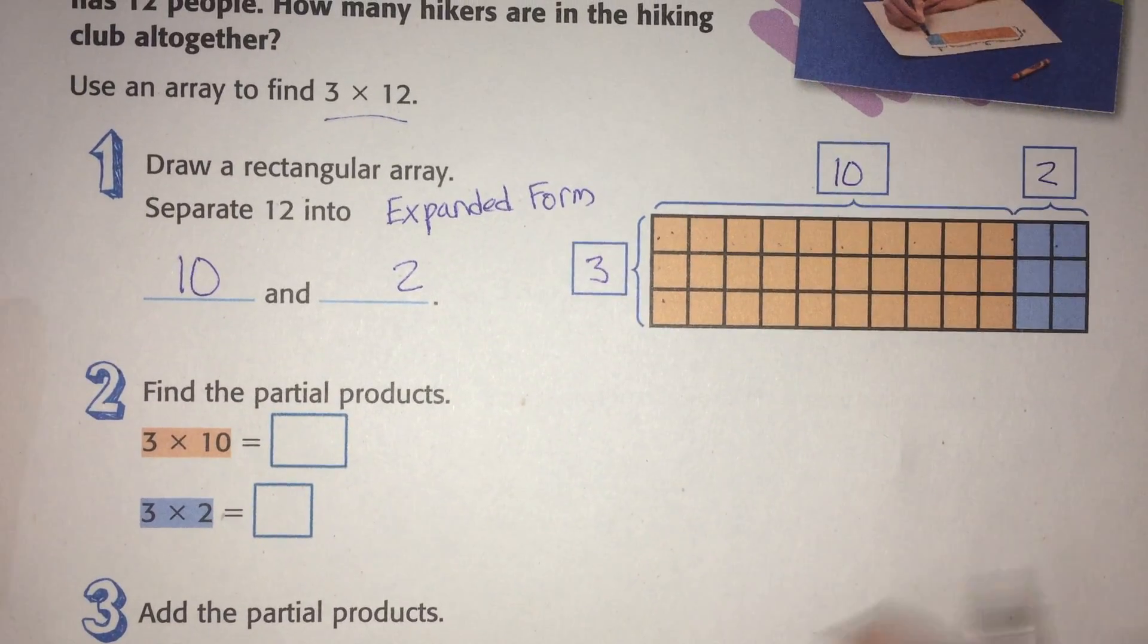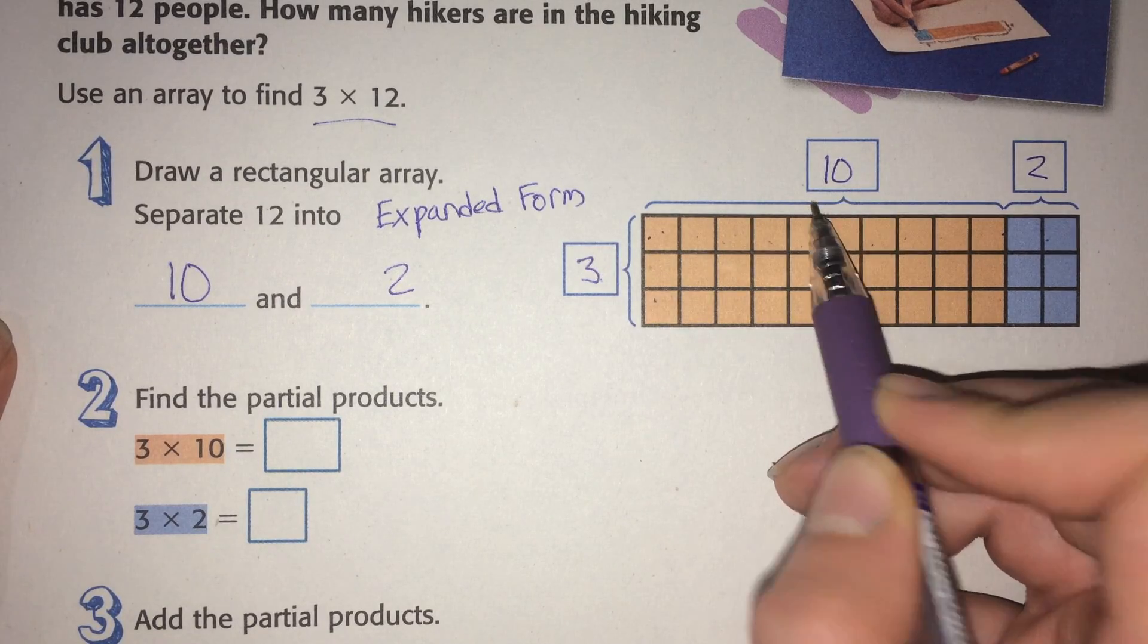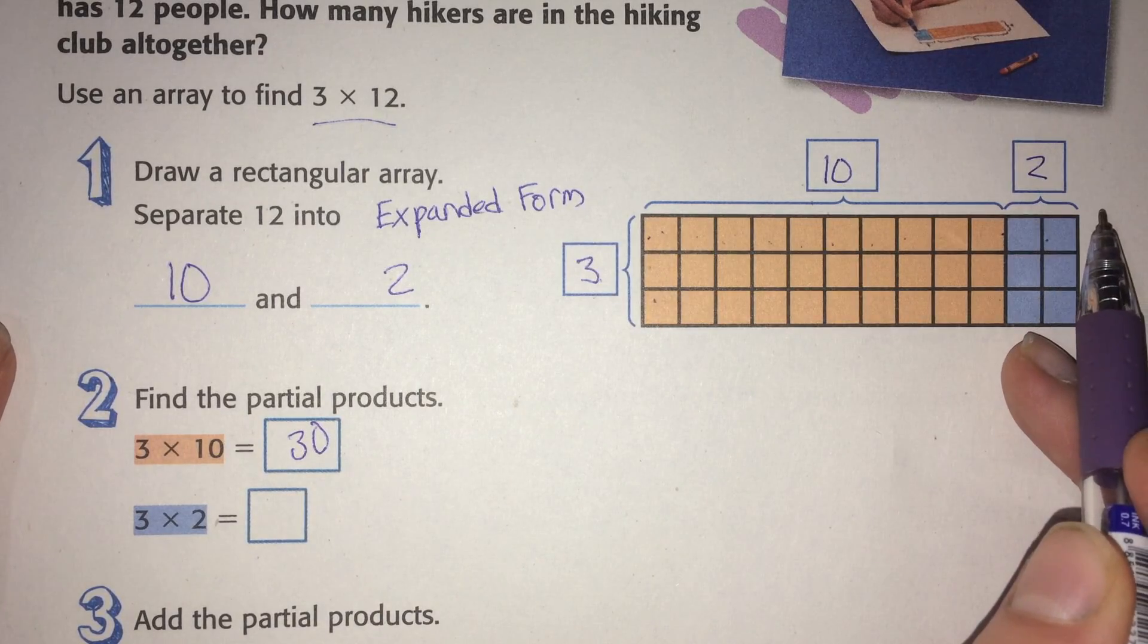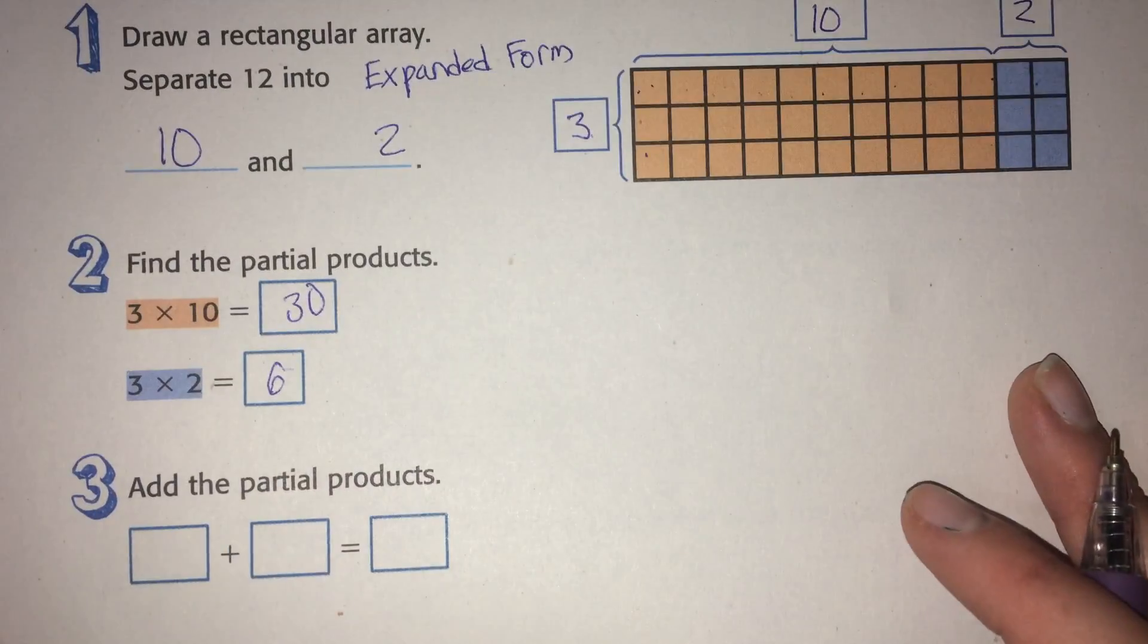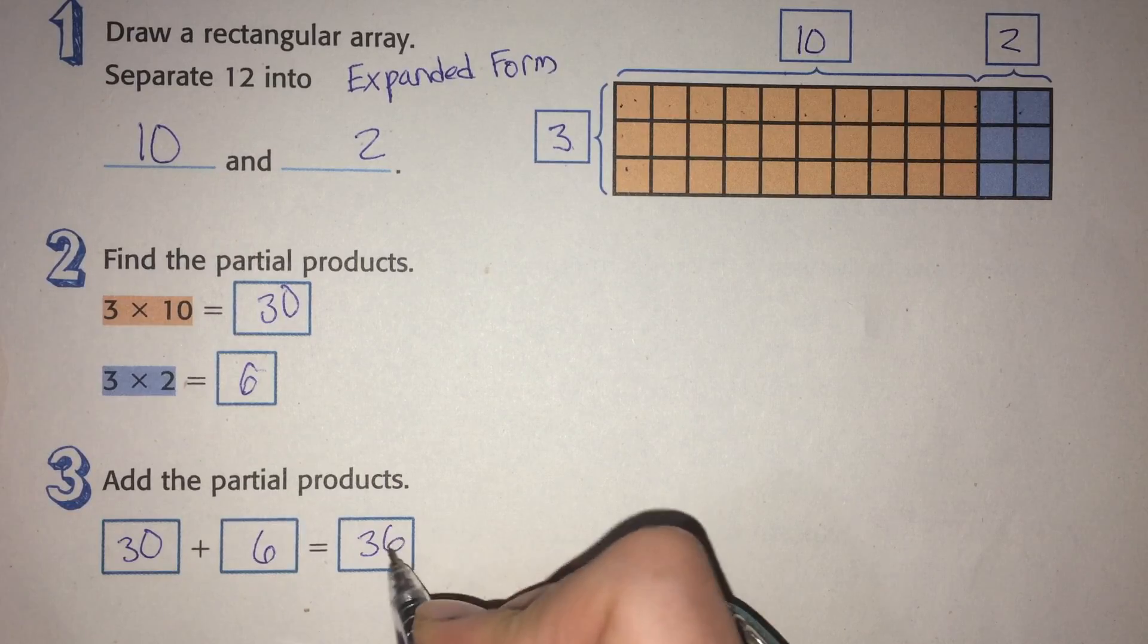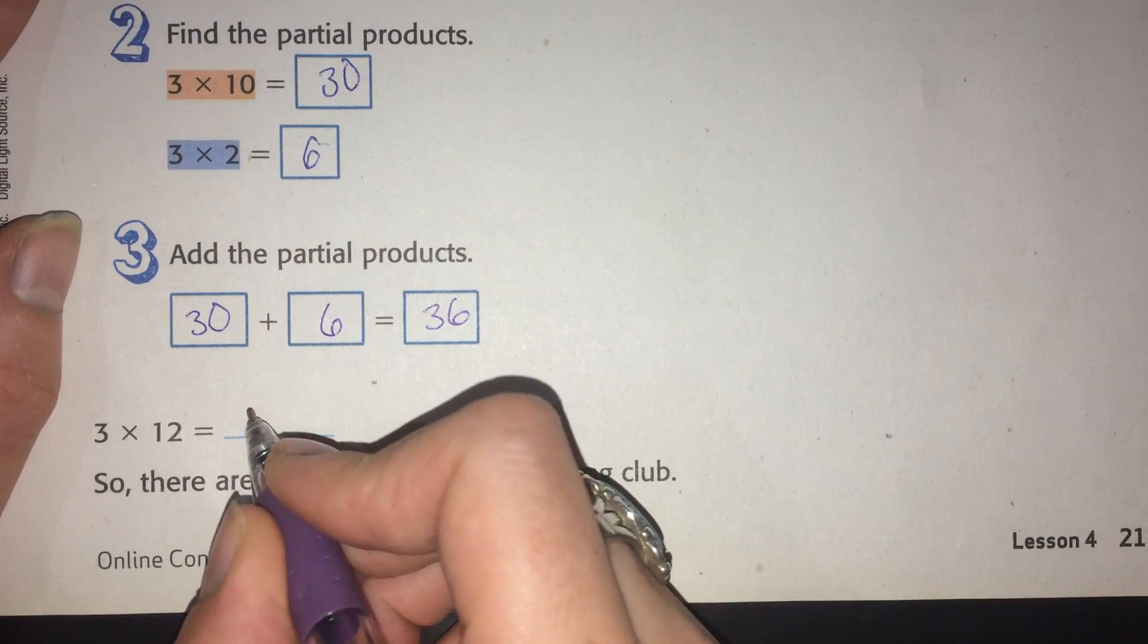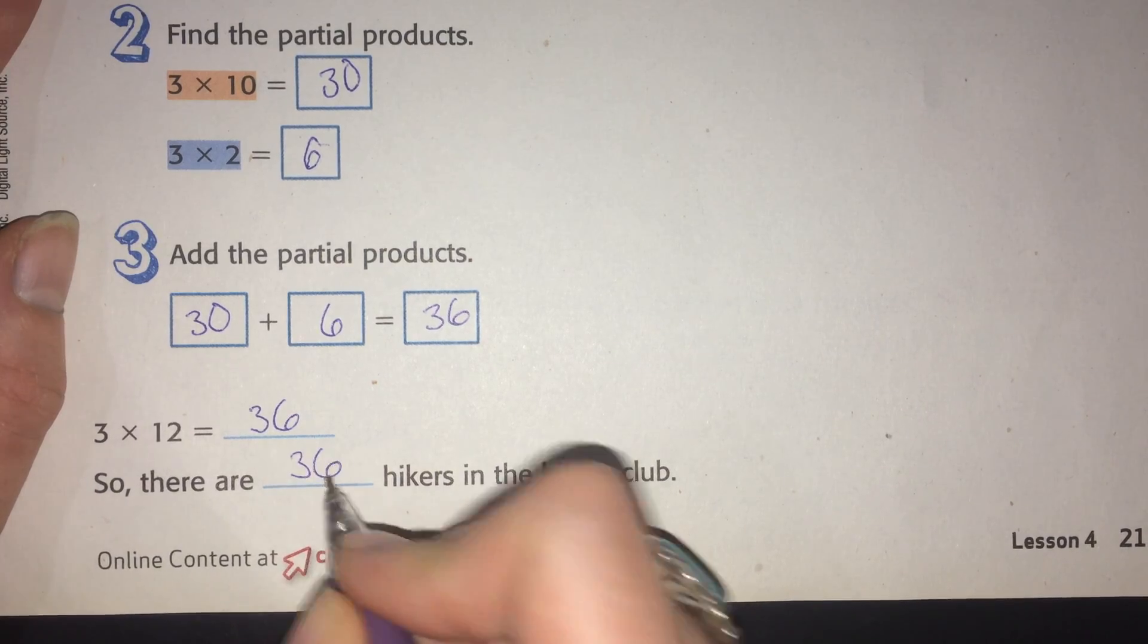Now we're going to find the partial products. So now what we need to do is multiply 3 times 10, which we know is 30, because we know our multiplication facts. And 3 times 2, which is 6, because we know our multiplication facts. Then it says add the partial products. So we add 30 and 6 together to get 36. So 3 times 12 equals 36. So there are 36 hikers in the hiking club.